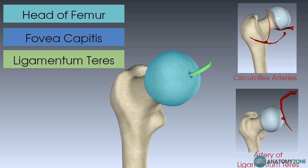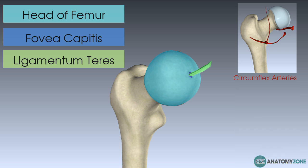When you reach adulthood and your growth plates fuse together, the artery that comes through the ligamentum teres actually obliterates. In adulthood, all of your blood supply to the neck and head of the femur is supplied by the circumflex arteries that wrap around the base of the neck. This has important clinical consequences if you were to have a fractured neck of femur.